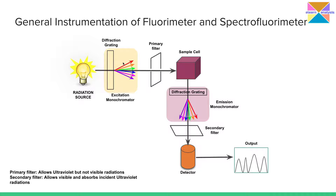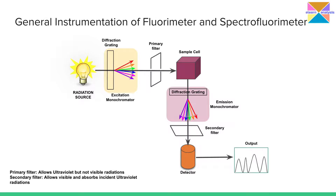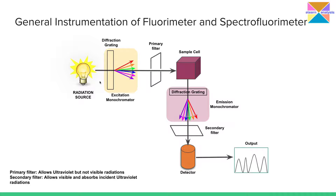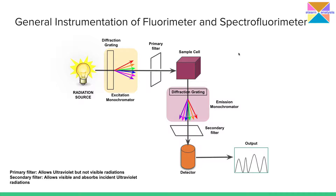The excitation monochromator selects wavelengths in the ultraviolet region, from 200 to 400 nanometers. Once those shorter wavelength radiations are isolated, they fall on the sample, which becomes excited and shows fluorescence. One important feature is that the source of radiation and the detector are arranged at right angles — unlike UV-visible spectroscopy where they are in a straight line. This is done to exclude transmitted radiation and measure only the emitted radiation.